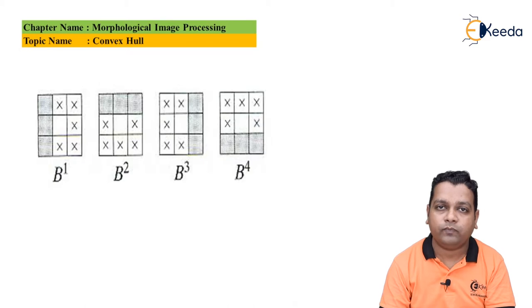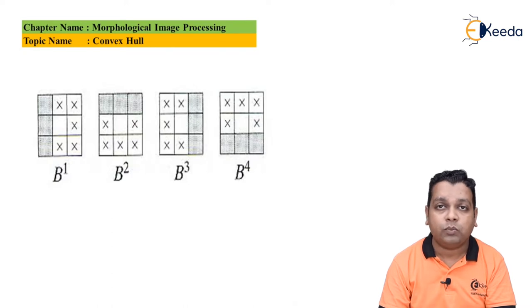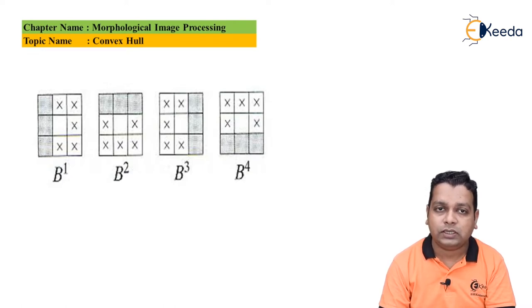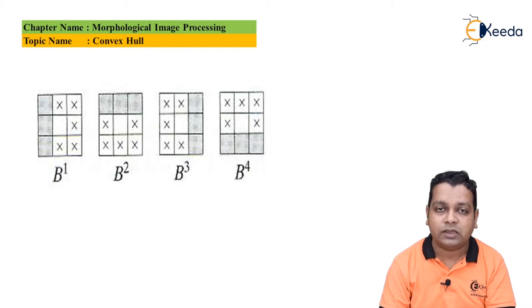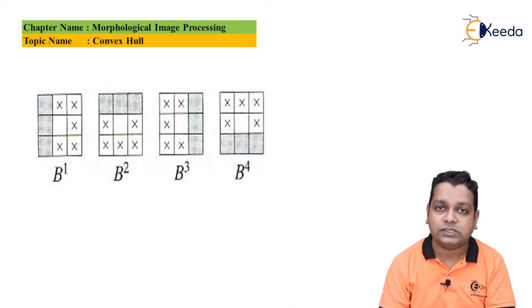The first structuring element, second structuring element, third structuring element, and fourth structuring element are represented as B^1, B^2, B^3, and B^4. You can see the changes as we go from B^1 to B^4. Here we have the shaded three pixels in the first column, then the first row in the second case, then the third column in the third one, and the third row in the fourth. The pixels marked with the cross sign have also rotated along the same sequence.